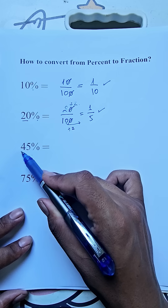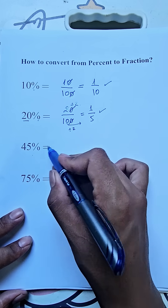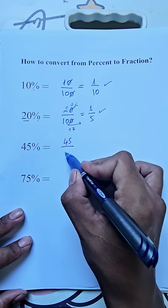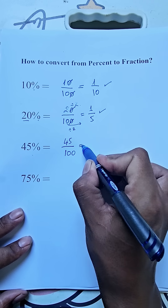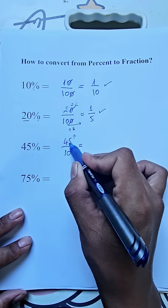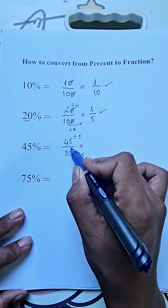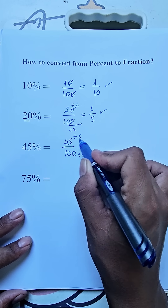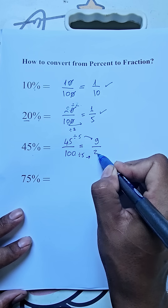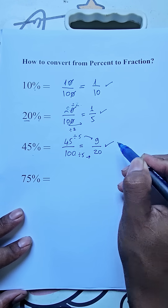45% is equal to 45 divided by 100. We divide both by 5: 45 divided by 5 equals 9, and 100 divided by 5 equals 20. So our answer is 9 divided by 20.